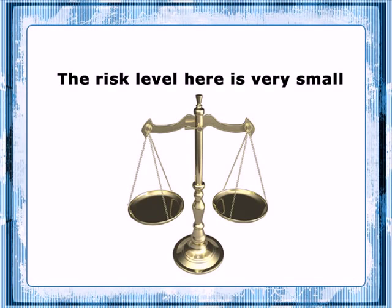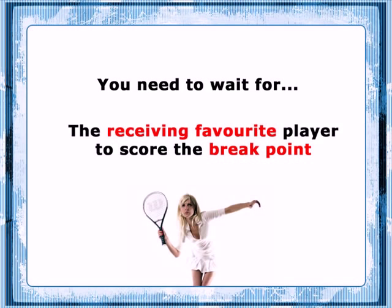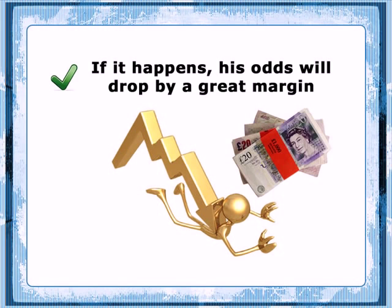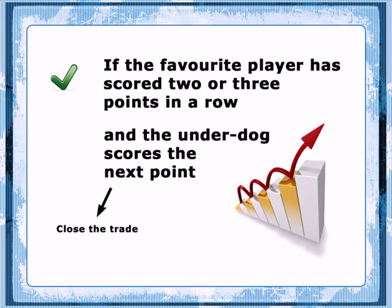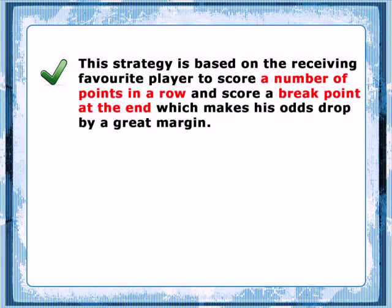The odds just can't drop below the initial back price. What you need to wait for is the receiving favourite player to score the break point — which is the same as a game point, just scored by a receiving player. If it happens, his odds will drop by a great margin and you'll be able to make a very nice profit. At any moment, if the underdog scores a point, you can lay the favourite off. If the favourite player has scored two or three points in a row and the underdog scores the next point, you can either close the trade or wait a bit more. In the first case, you will break even as the scored points will have already pushed his odds down a little. If you wait for the favourite to score the break point, his odds will drop and you'll make a nice profit by laying him off at a much smaller price than you backed him at. In short, this strategy is based on the receiving favourite player scoring a number of points in a row and scoring a break point at the end, which makes his odds drop by a great margin.